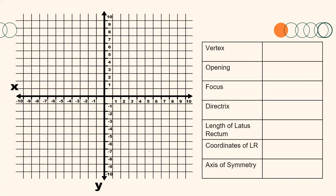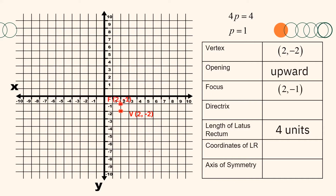From the previous solution, the vertex is at (2, negative 2), the opening is upward, the length of the latus rectum is 4 units, and p is 1. Using p equals 1 and the upward opening, the focus is 1 unit above the vertex, which is the point (2, negative 1). The directrix is a line outside the parabola that is also 1 unit away from the vertex — therefore, it is the line y equals negative 3.